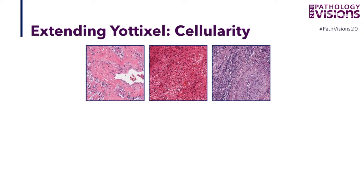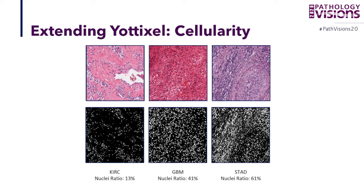We then extended eutixel by going back to cellularity, which is popular for different purposes. We segment the cell nuclei — not necessarily exactly, since we are not looking at morphological features or exact counting. We just need an idea of how cellular a patch is. Examples range from 13% to 41% for glioblastoma GBM to 61% and so on. This quantification is for the computer — not the expert — to figure out whether it's dealing with a hypercellular or hypocellular region. That's very important information.